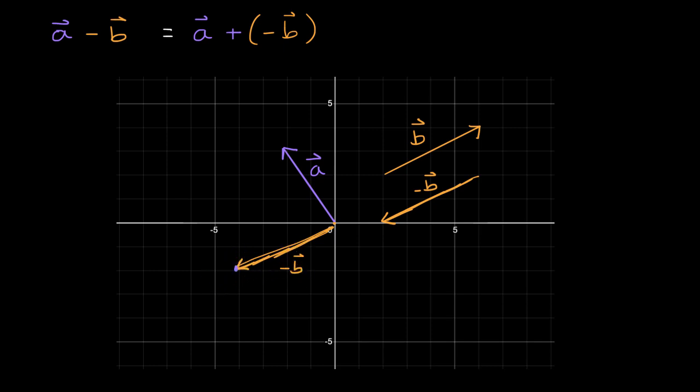So one way that you are probably familiar with is you have vector a, and then what you do is you take a copy, or you could think of shifting vector b, so its tail starts at the head of vector a.